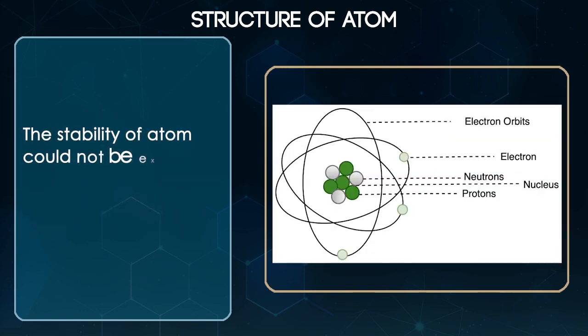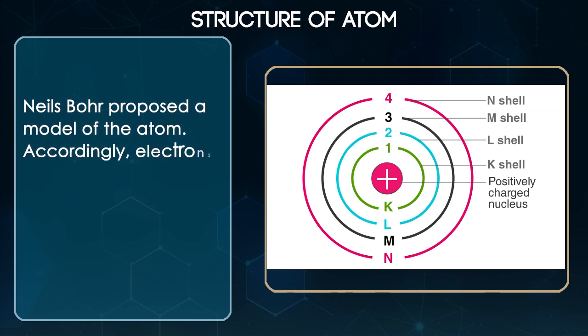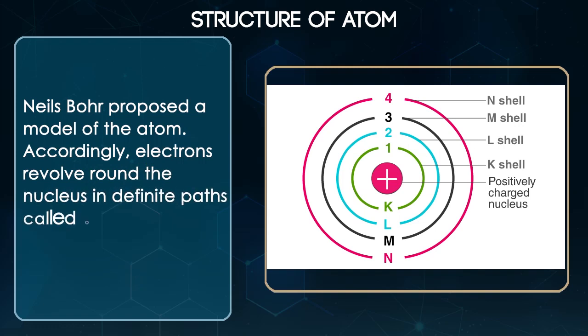The stability of atom could not be explained by Rutherford's model of atom. Niels Bohr proposed a model of the atom. Accordingly, electrons revolve around the nucleus in definite paths called orbits or energy levels.